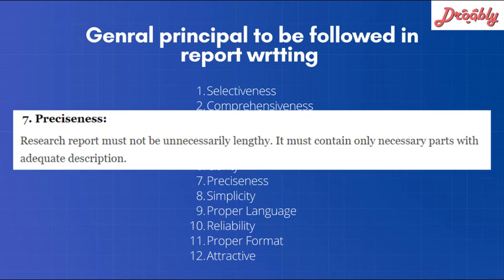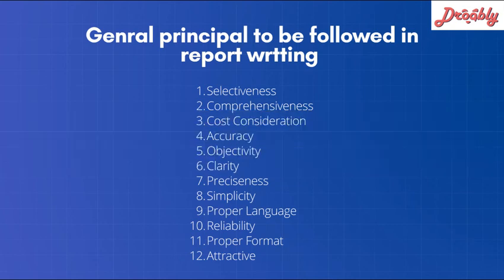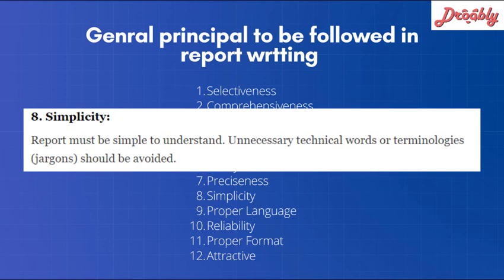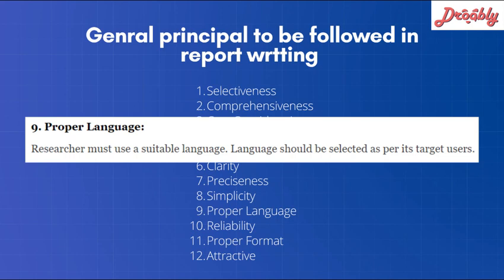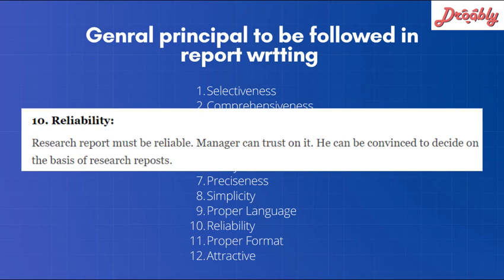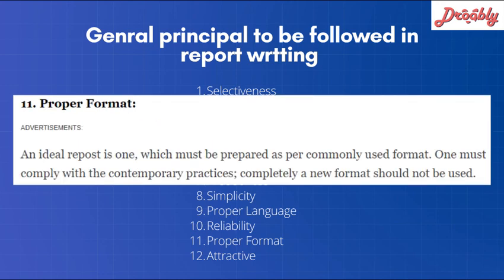The seventh principle is preciseness — research reports must not be unnecessarily lengthy and must contain only necessary parts with adequate description. Eighth is simplicity — the report must be simple to understand for all readers; unnecessary technical words or terminologies, called jargons, should be avoided. Ninth is proper language — the researcher must use a suitable language selected as per its target user. Tenth is reliability — the research report must be reliable so that a manager can trust it and make decisions based on it. Eleventh is proper format — a report must be prepared as per the commonly used format, complying with contemporary practices; a completely new format should not be used.